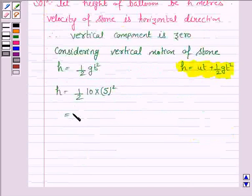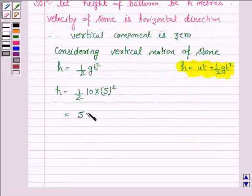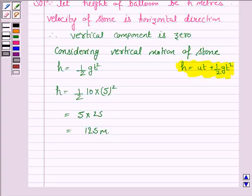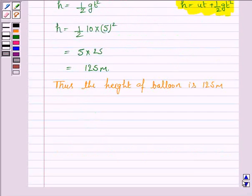This gives us 2 into 5 into 25, which equals 125 meters. Thus, the height of the balloon is 125 meters.